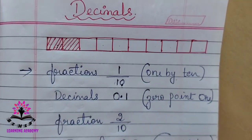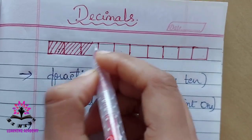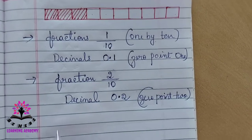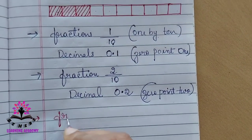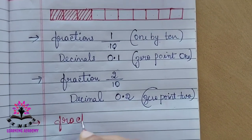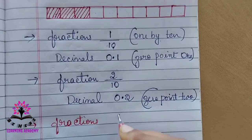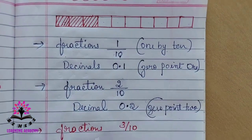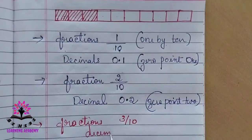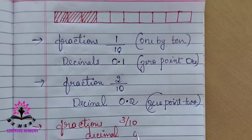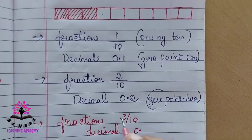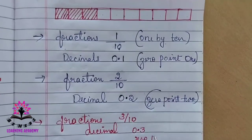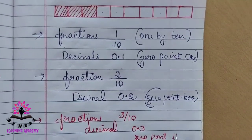Let us consider one more — I will shade one more part here. In fractions, I can write it as 3/10; out of ten equal parts, three are shaded. And in decimal I can write it as 0.3. I read this as 0.3.